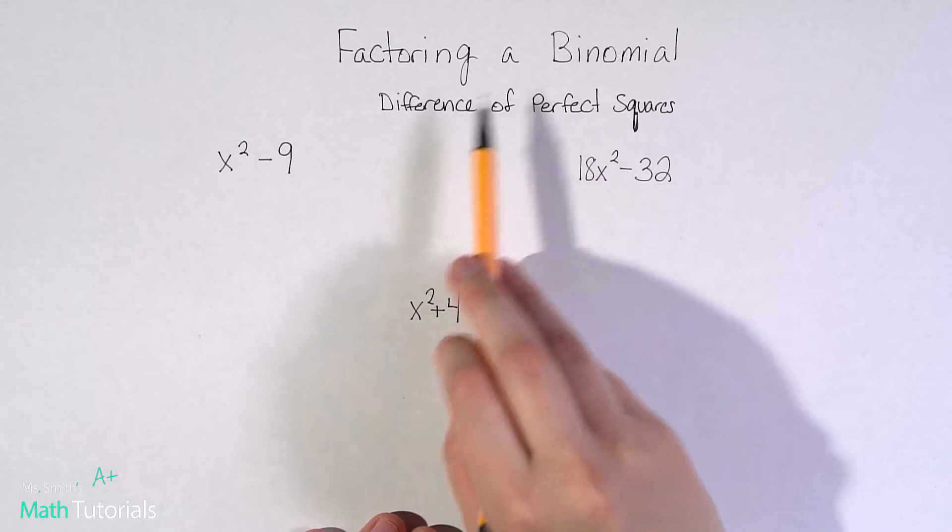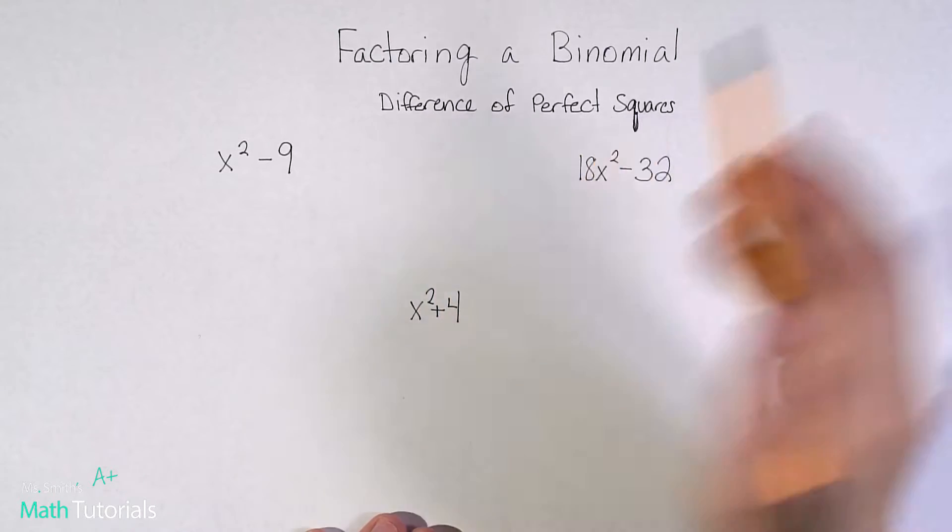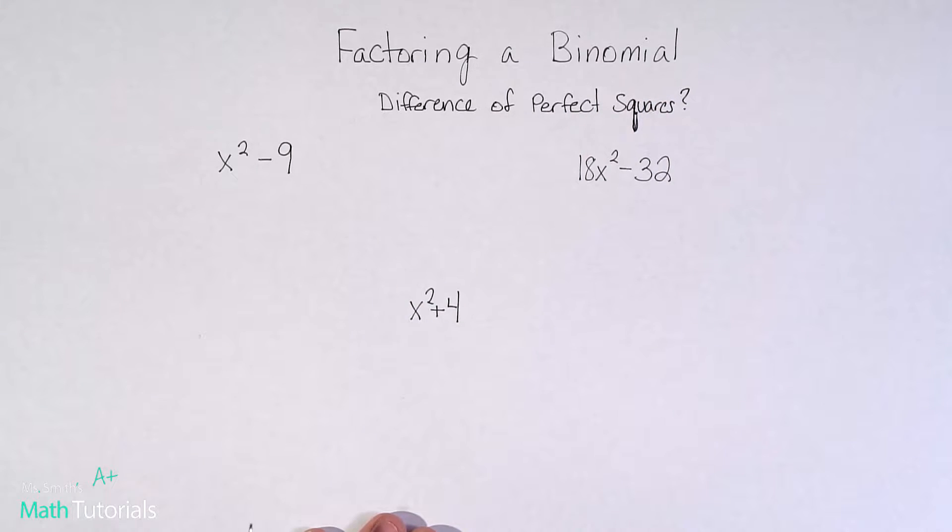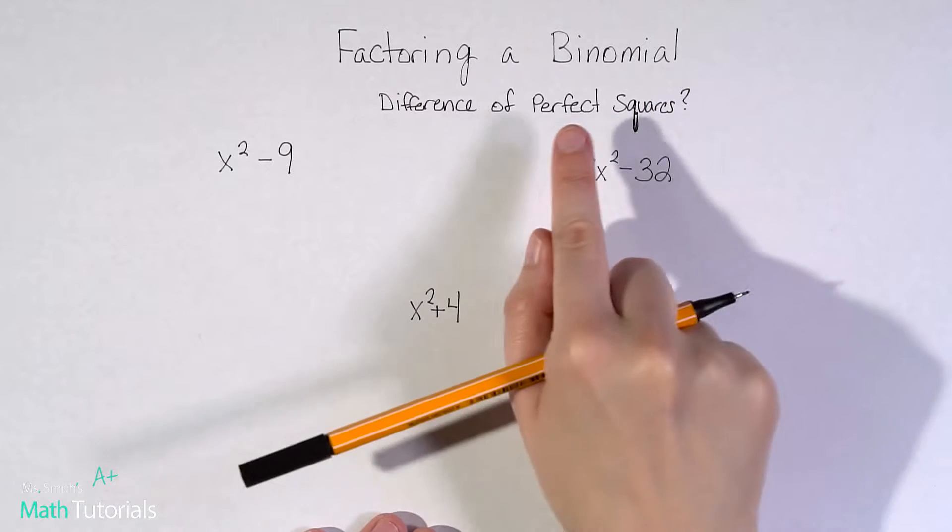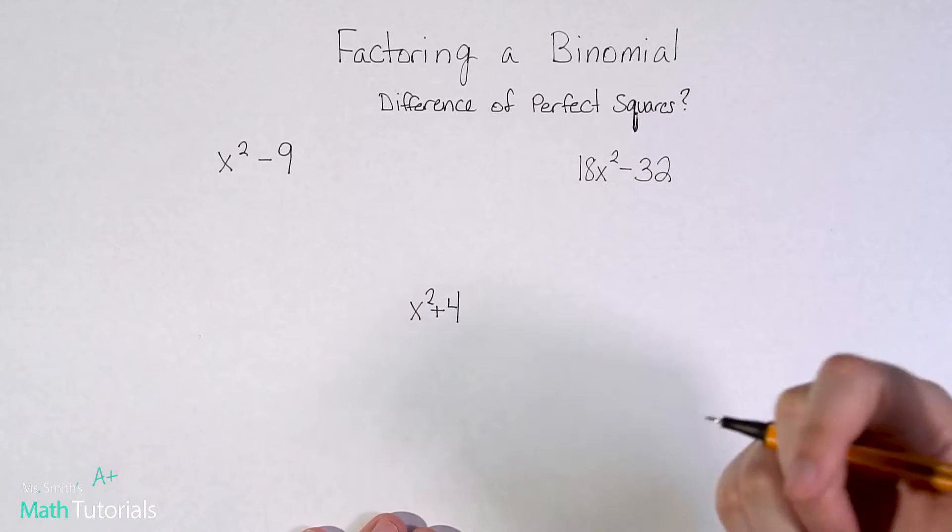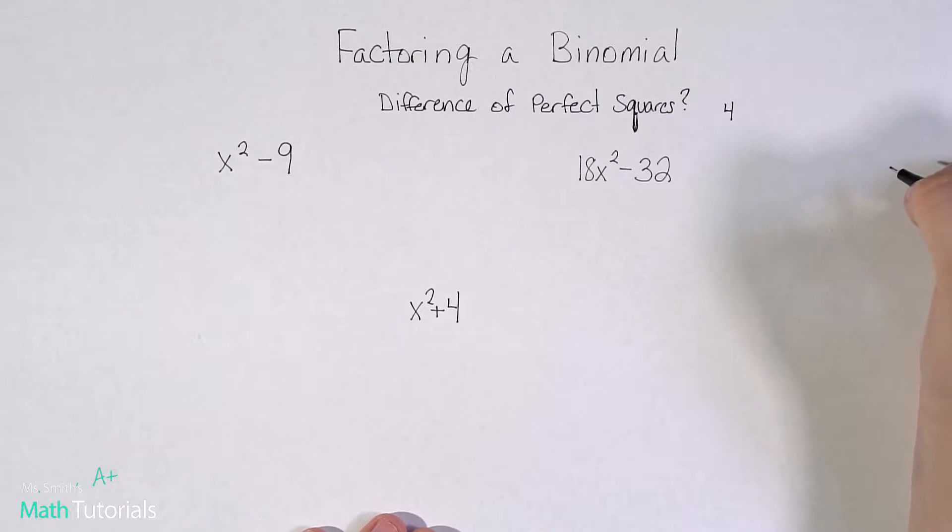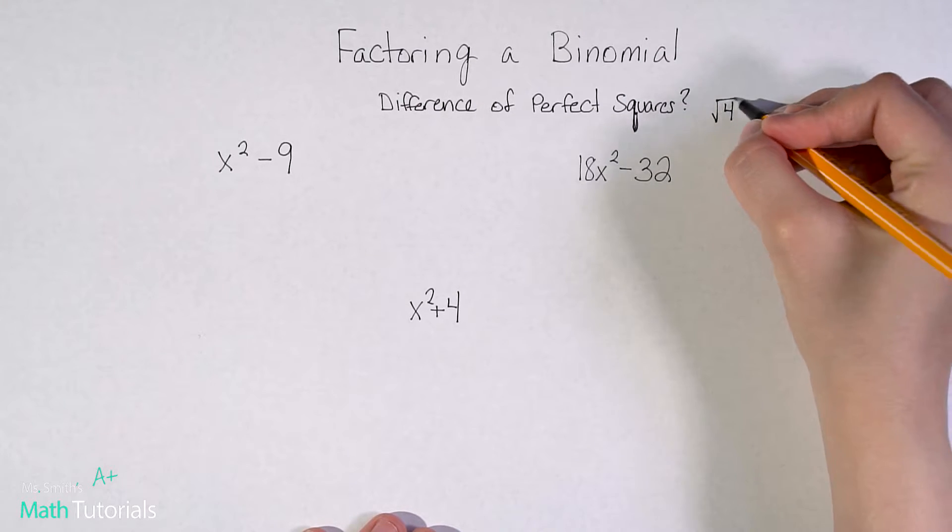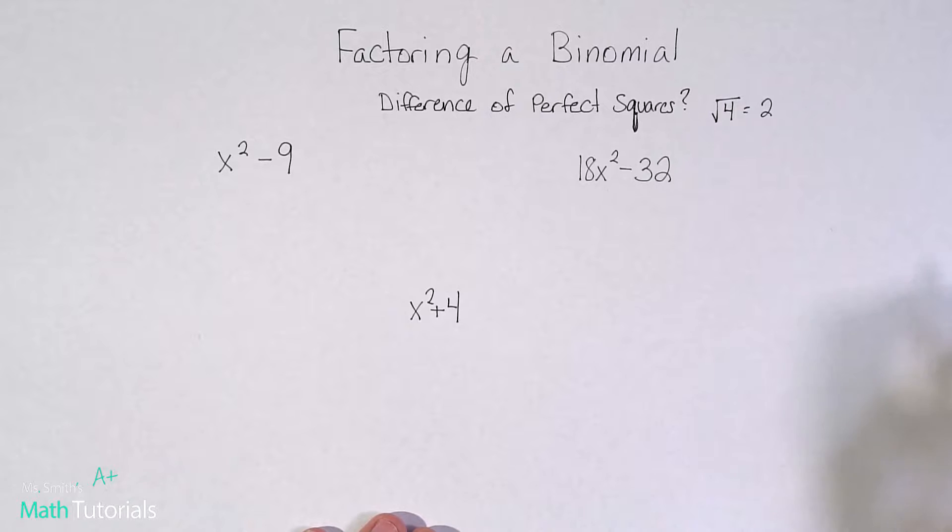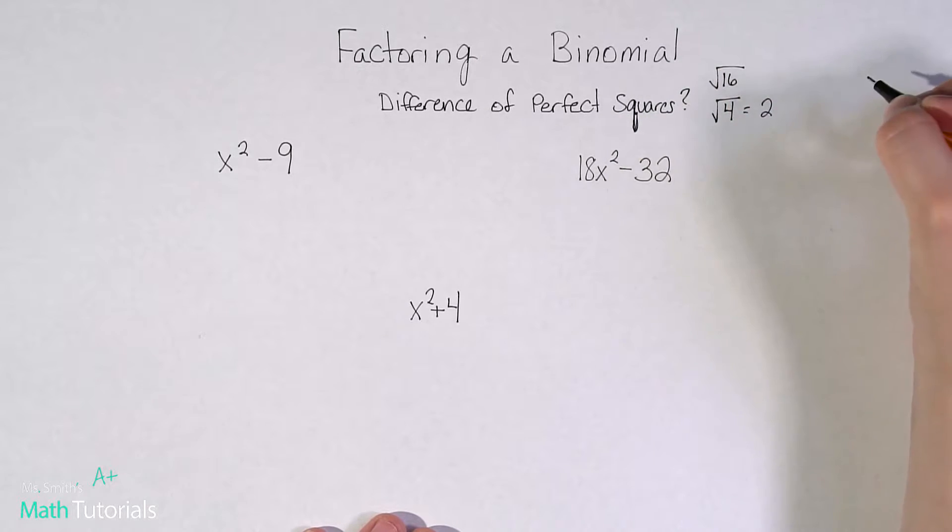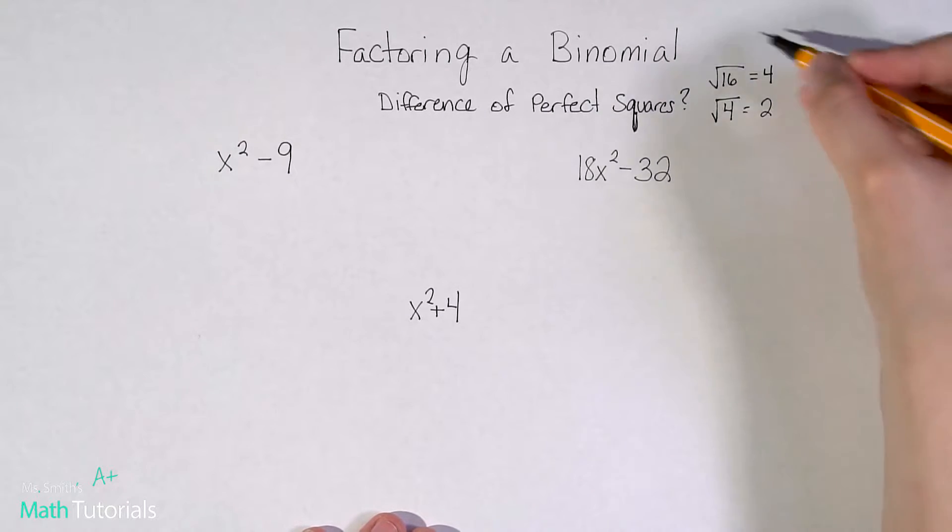When we factor a binomial, we're asking ourselves a question. Do we have a difference of perfect squares? So we've got to remember what is a perfect square. Perfect squares are numbers like immediately four comes to mind. And what I mean by it's a perfect square is I could take the square root of four and I could get a whole number, two. Another one that comes to mind will be like 16. I could take the square root of 16 and get a whole number. Other numbers, these numbers would be perfect squares. If you can get a whole number out of it, it's a perfect square.